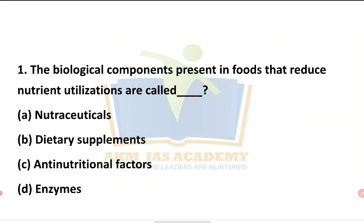Nutraceuticals means taking nutrients in tablet form. Dietary supplements are varieties of tablets and capsules. Anti-nutrition factors are those that prevent nutrient utilization. Enzymes increase the biological process. So the biological component present in food that reduces nutrient utilization is called anti-nutrition factors.